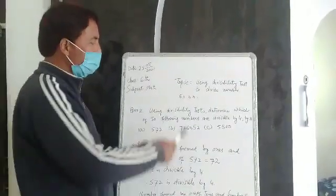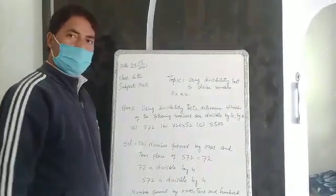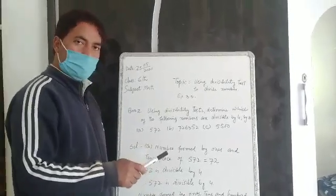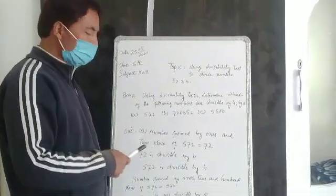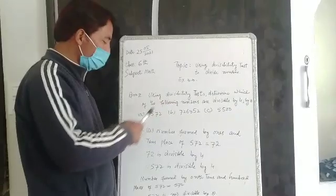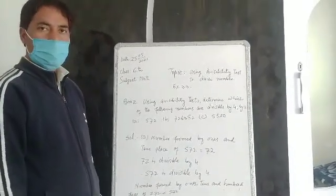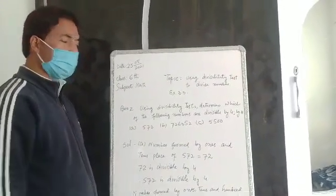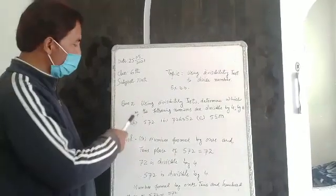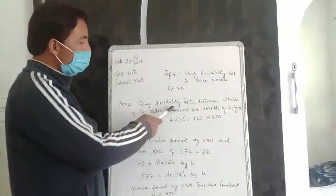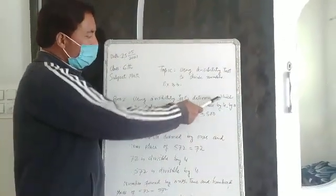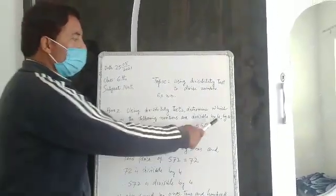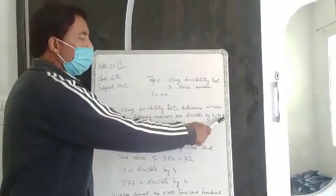Exercise 3.3 — we are going to do the second question of this exercise. The second question says: using divisibility tests, determine which of the following numbers are divisible by 4 and by 8.